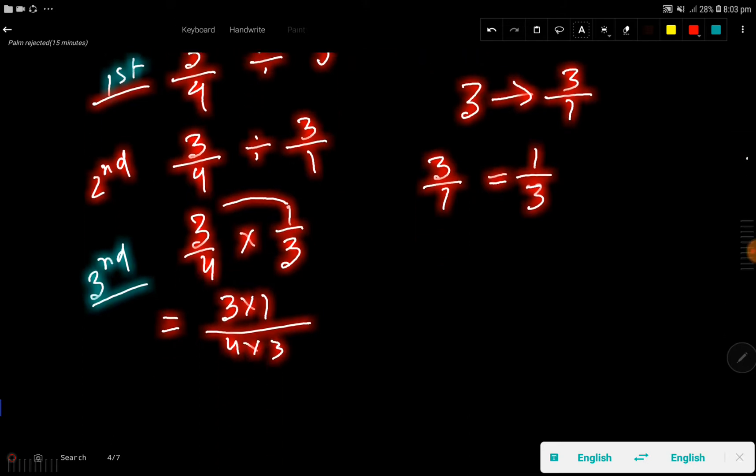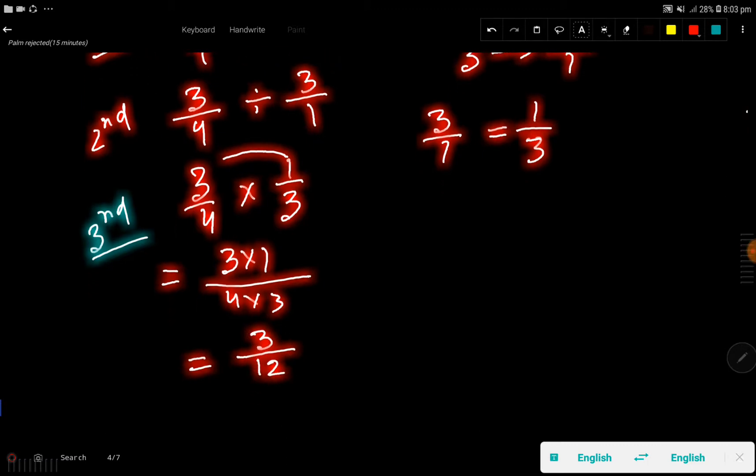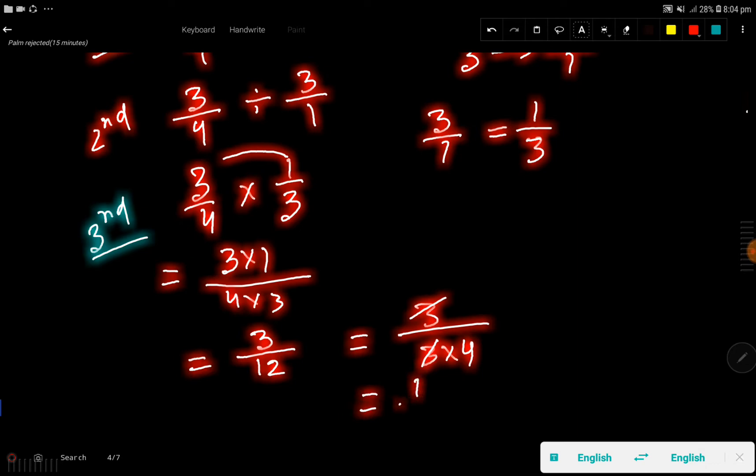So we are getting here 3 divided by 12. We would like to write the simplest form. So look, we can rewrite this like 12 means 3 times 4. These 3s will cancel each other and we'll get 1 over 4. That is, 1 over 4 is the answer. This is the simplest form.